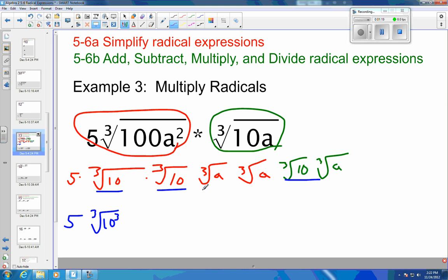And then I'm looking at my A, so I've got cube root of A, cube root of A, cube root of A. So again, that is the cube root of A to the third.